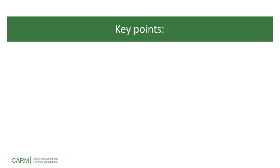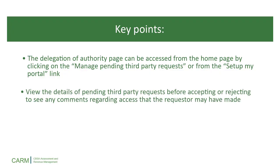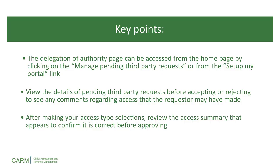Here are some key points to remember. The Delegation of Authority page can be accessed from your homepage by clicking on the Manage Pending Third-Party Requests or Setup My Portal link. View the details of pending third-party requests before accepting or rejecting to see any comments regarding access that the requester may have made. And finally, after making your access type selections, review the access summary that appears to confirm it is correct before approving.